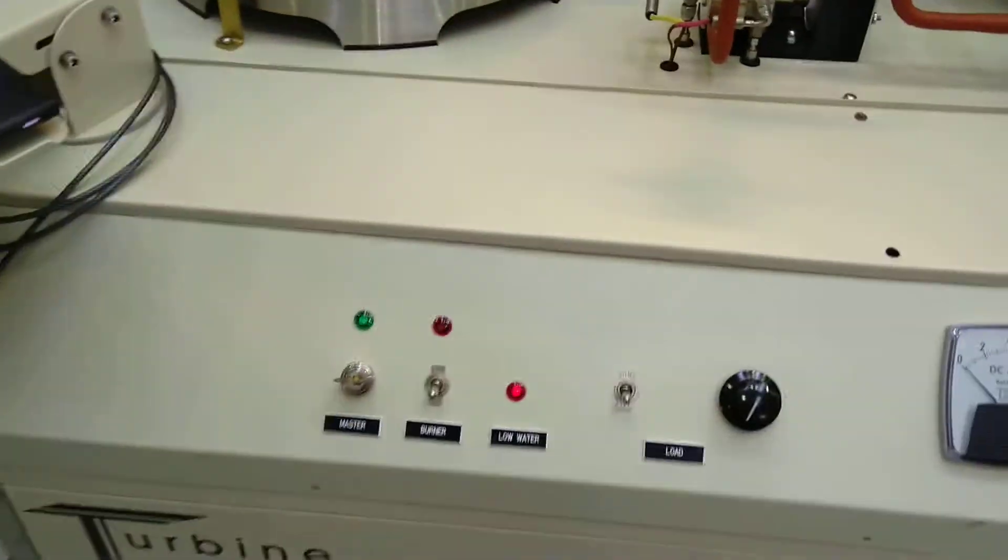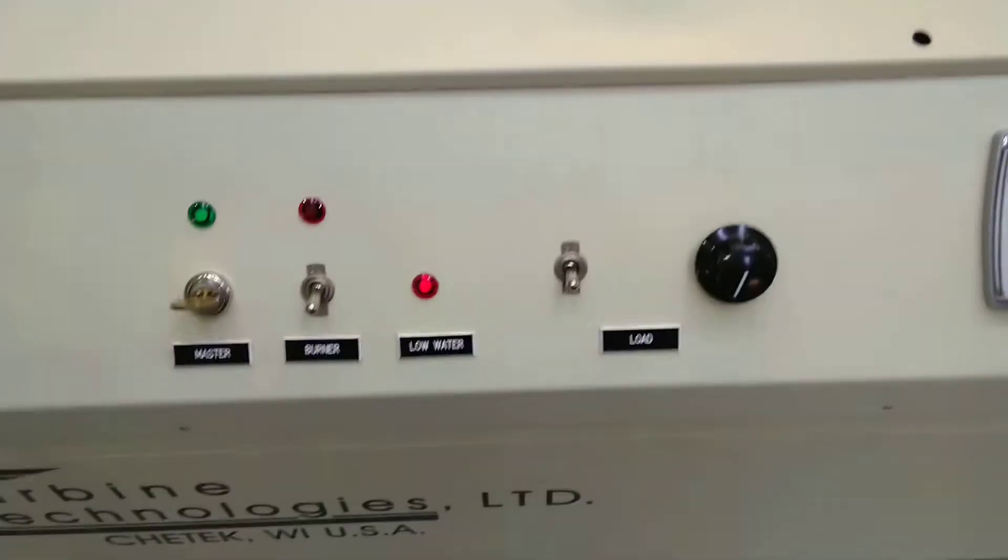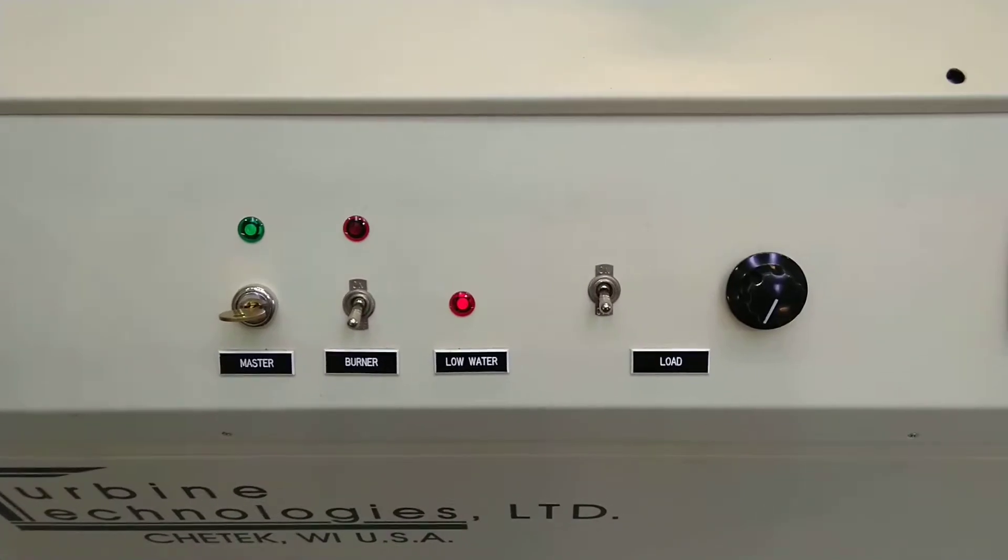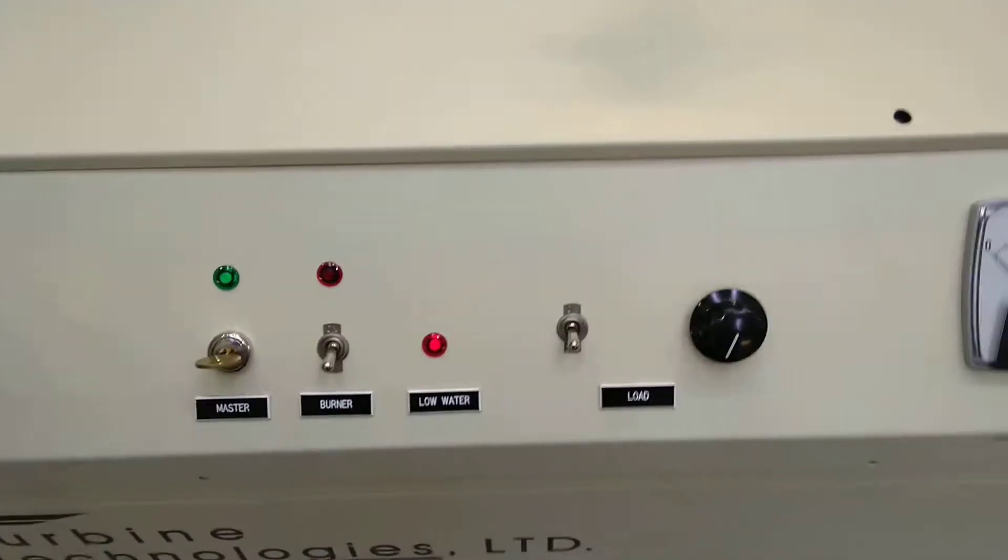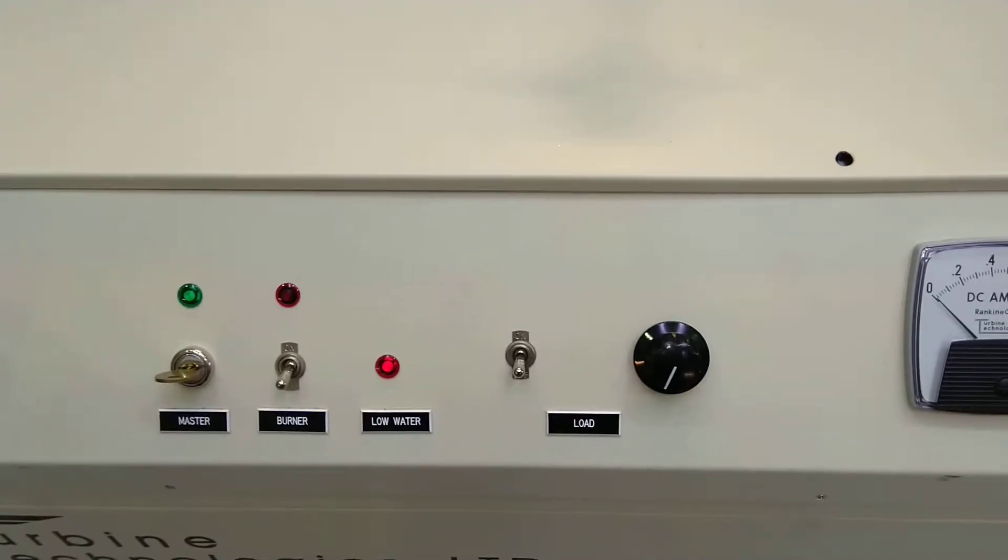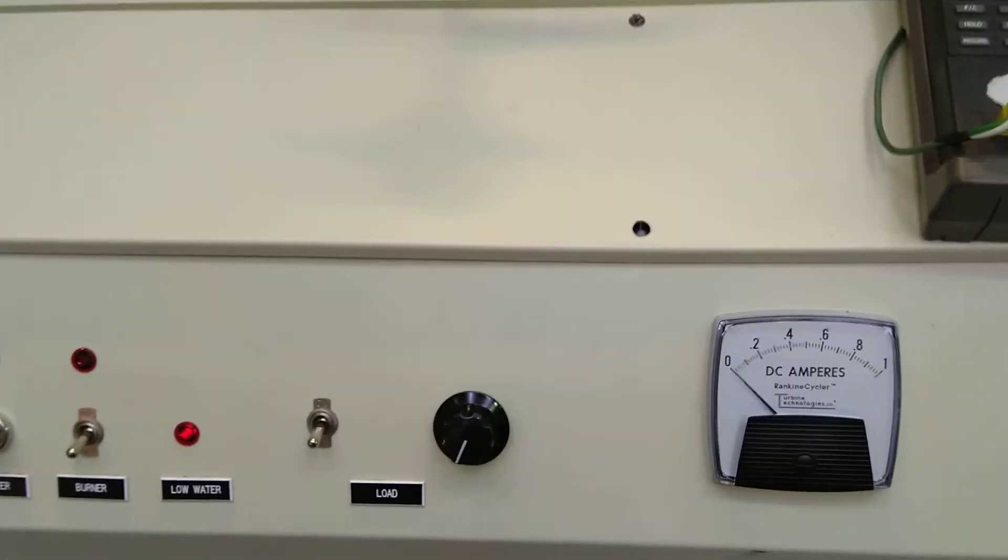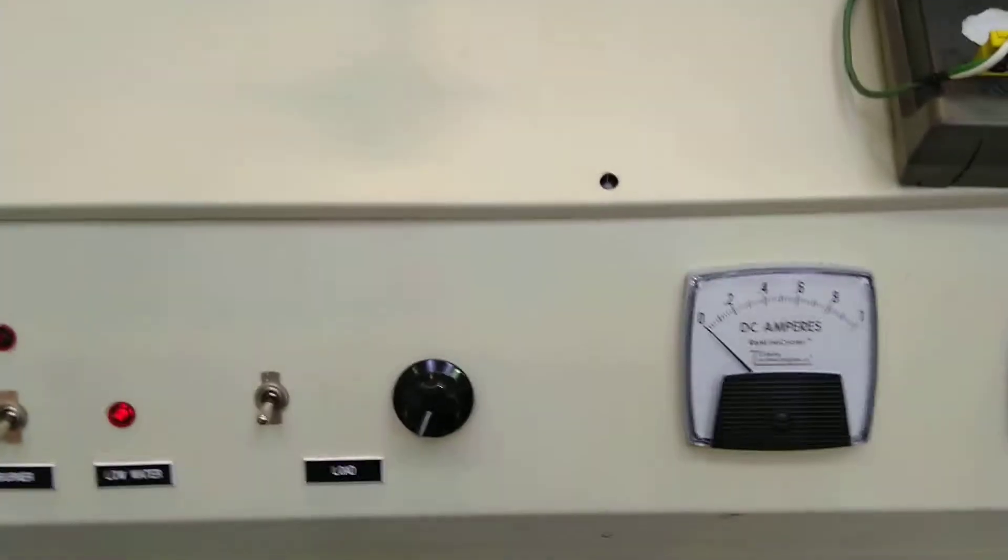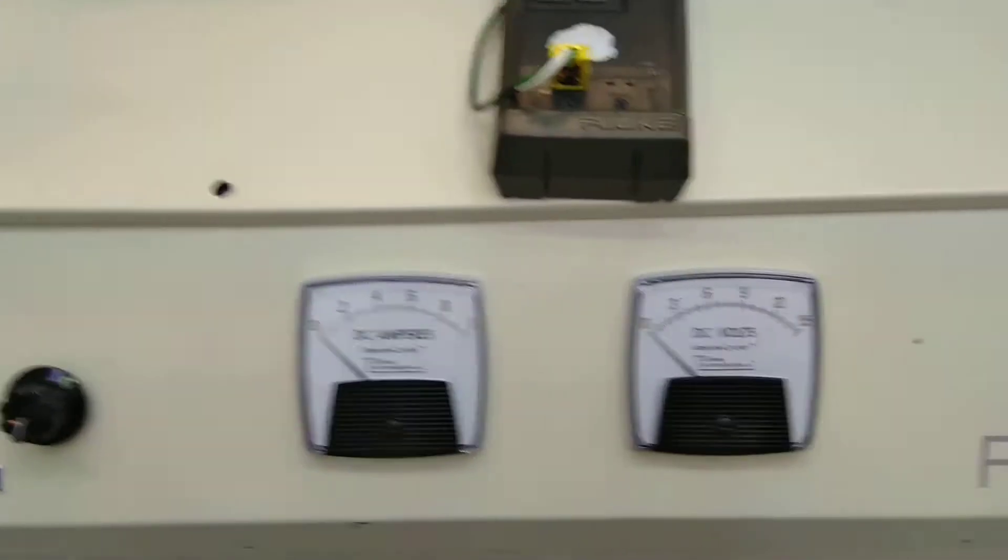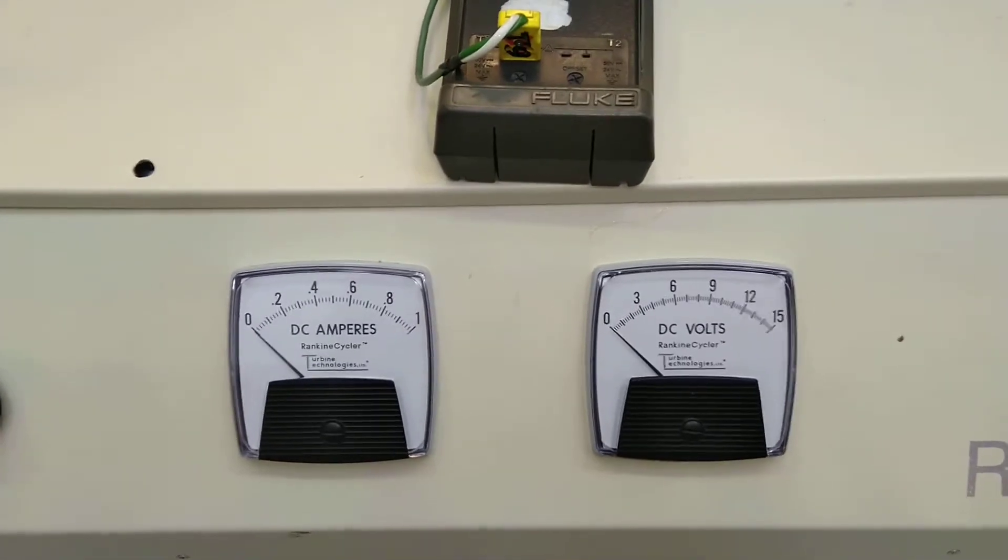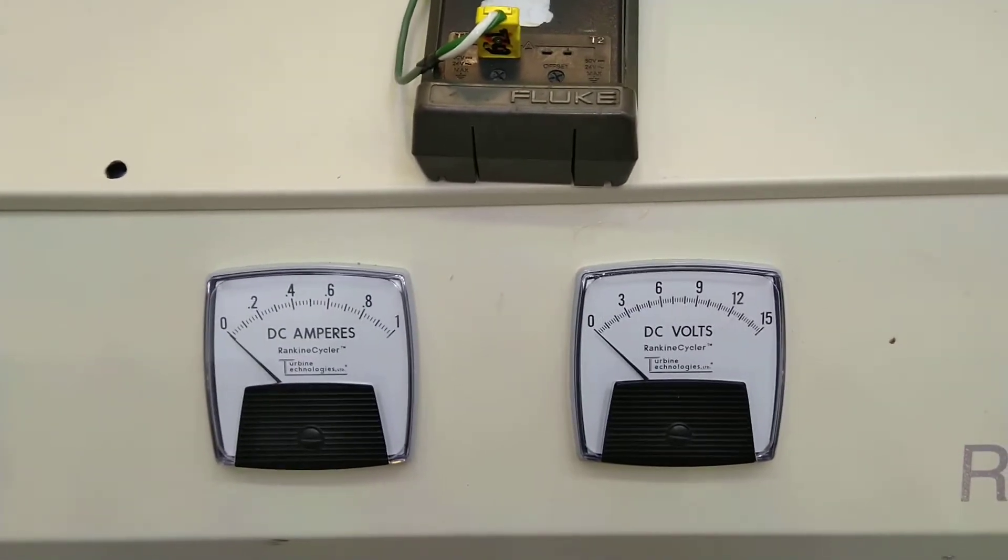Let's take a look at the controls here. On the left you see the master switch, then there's the burner switch. The low water light tells that there's no water in the boiler at the moment. And then there is the load switch that we can control the load, and there's the current and volt measurements here shown.